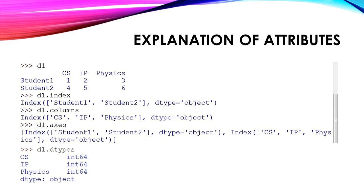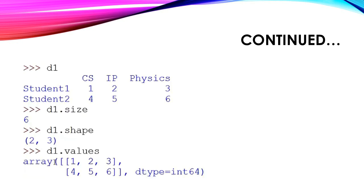Now we shall see attributes related to data frames. The syntax is: dataframe_object.attribute_name. The first attribute is index: d1.index gives the index names, which are student1 and student2. The second is columns: d1.columns gives the column names, that is cs, ip, physics. The third is axes, which shows what the x-axis and y-axis consist of — rows (student1, student2) and columns (cs, ip, physics). The dtypes attribute gives the data type of each column: cs, ip, and physics are all integer.